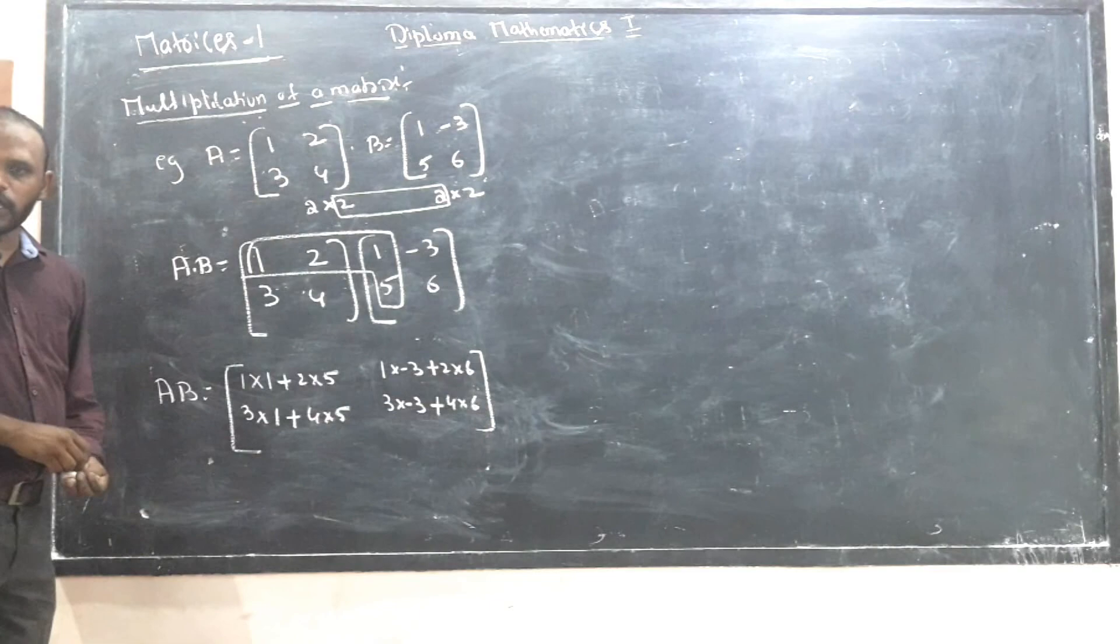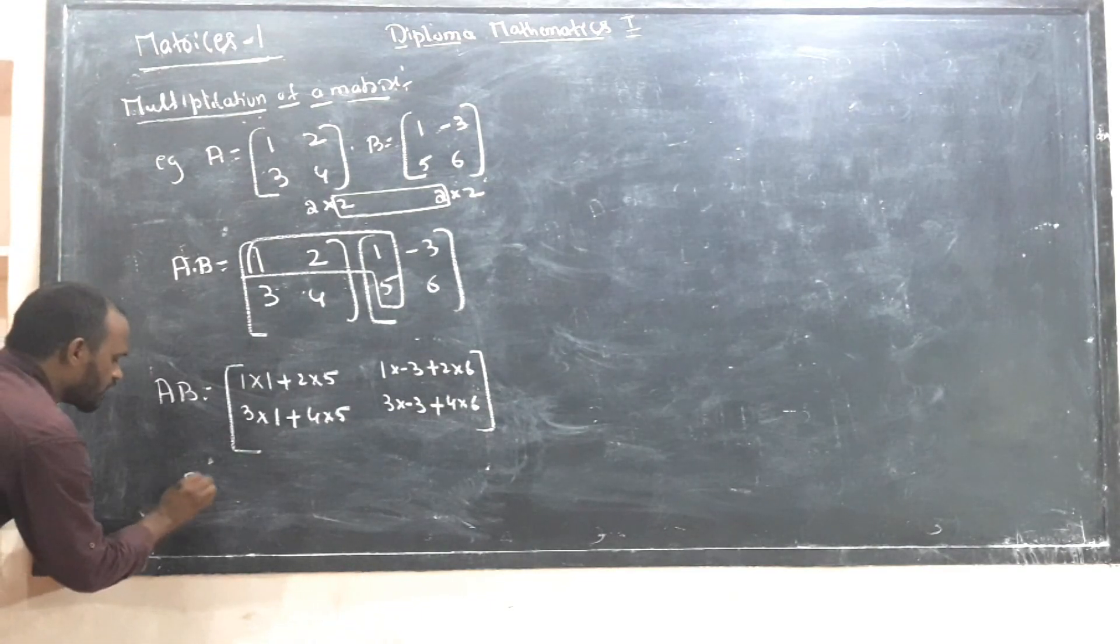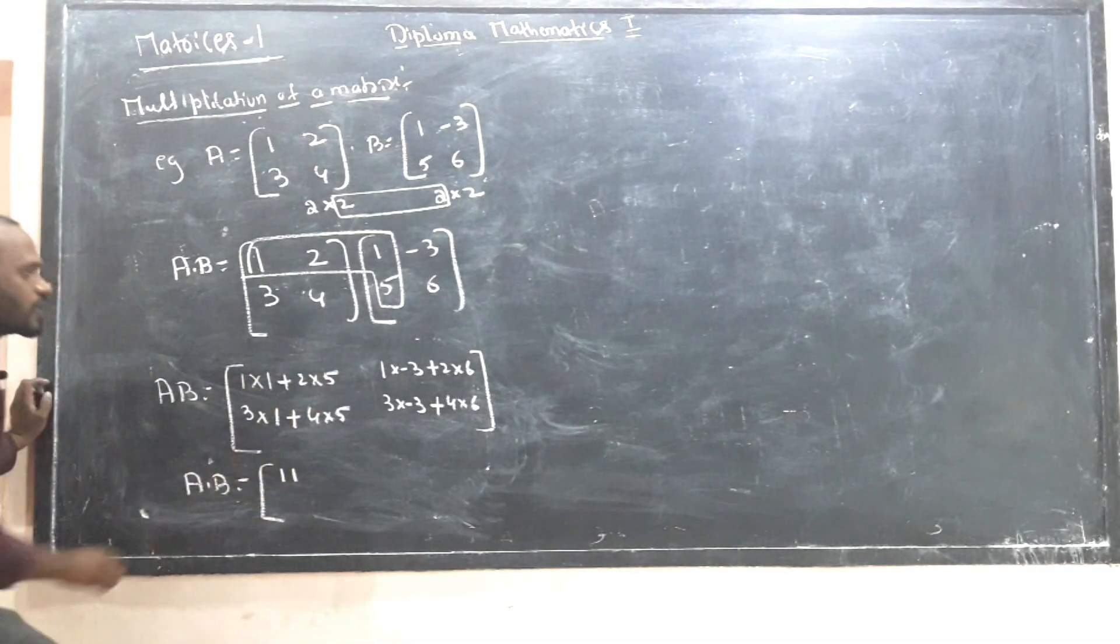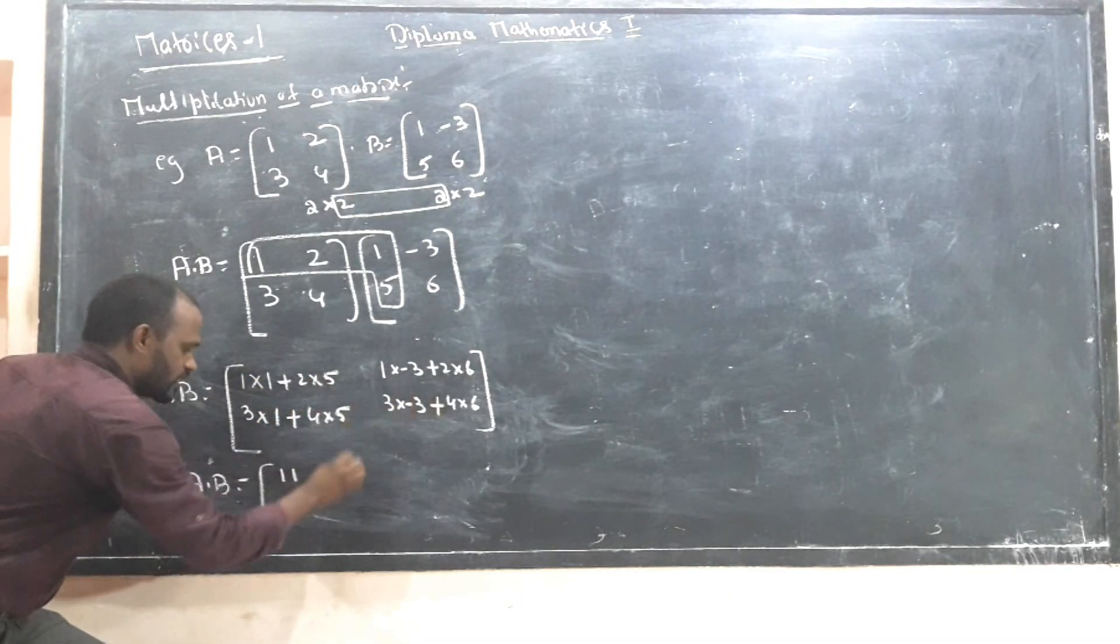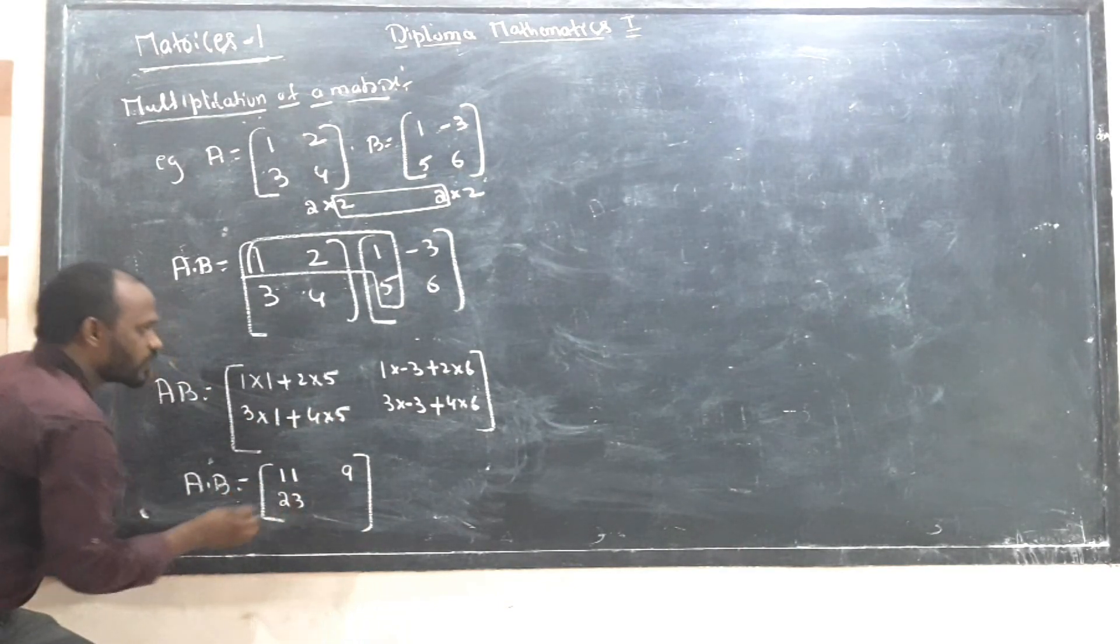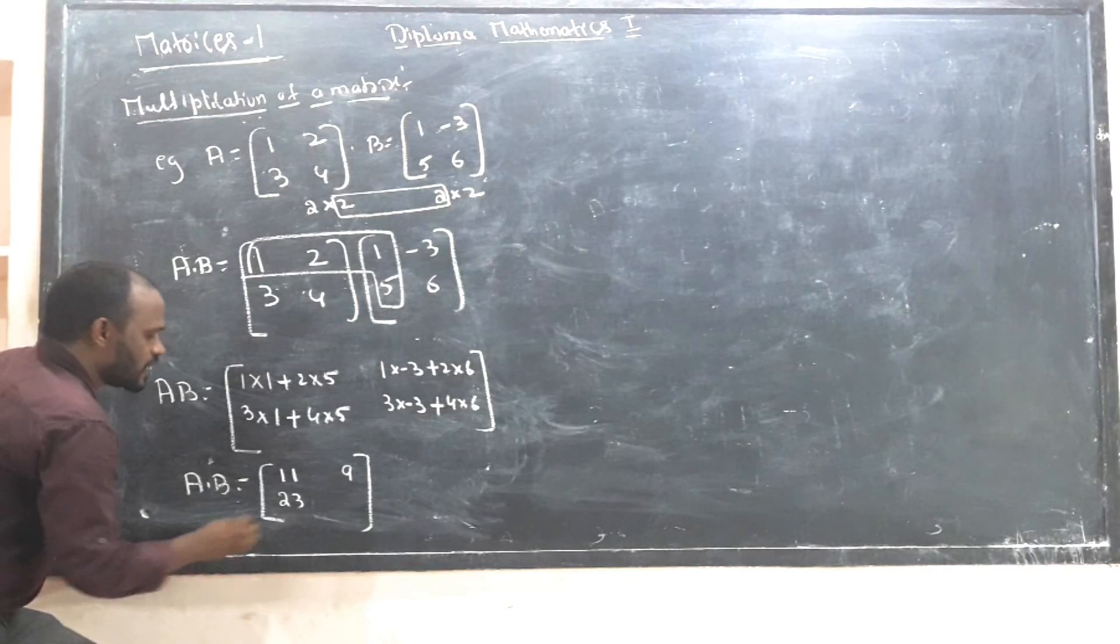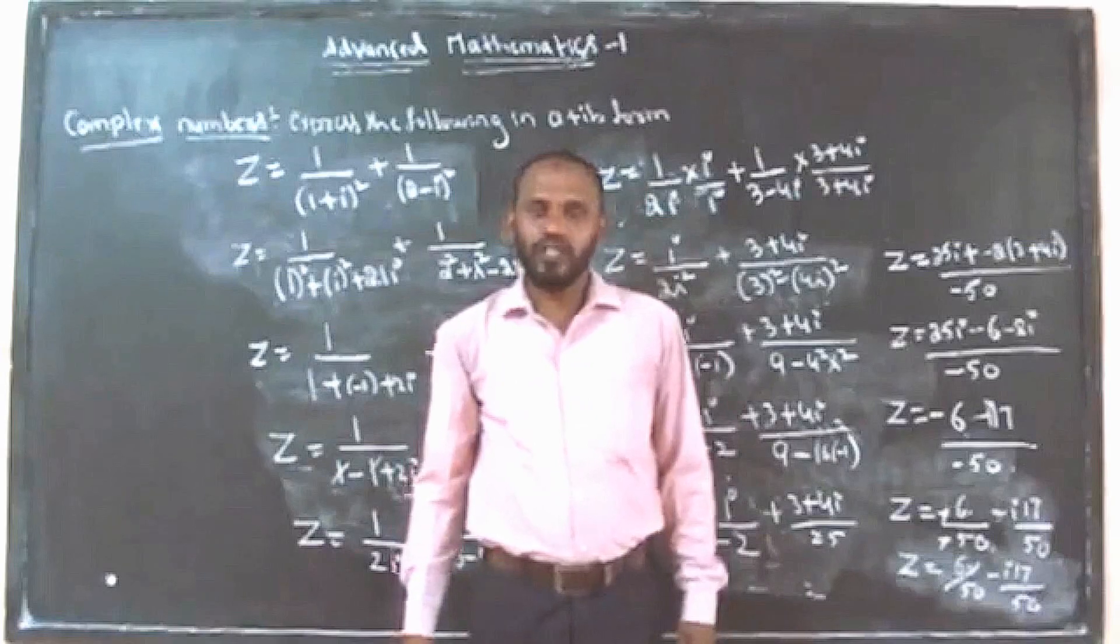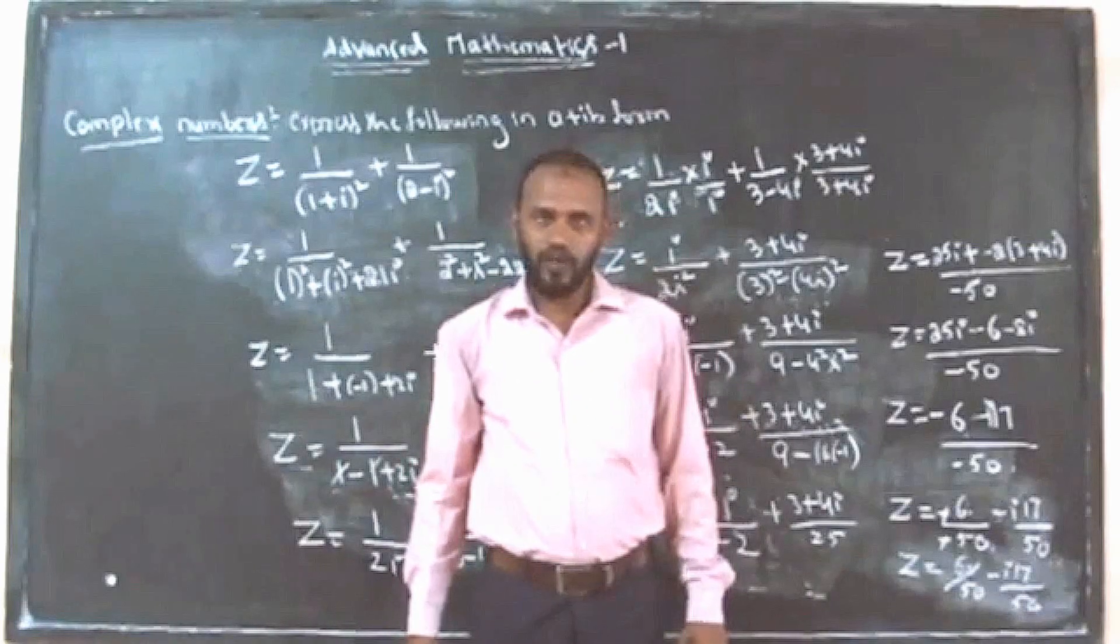Now calculate directly: 10 plus 1 equals 11, 12 minus 3 equals 9, 20 plus 3 equals 23, 24 minus 9 equals 15. This is the 2 by 2 result.